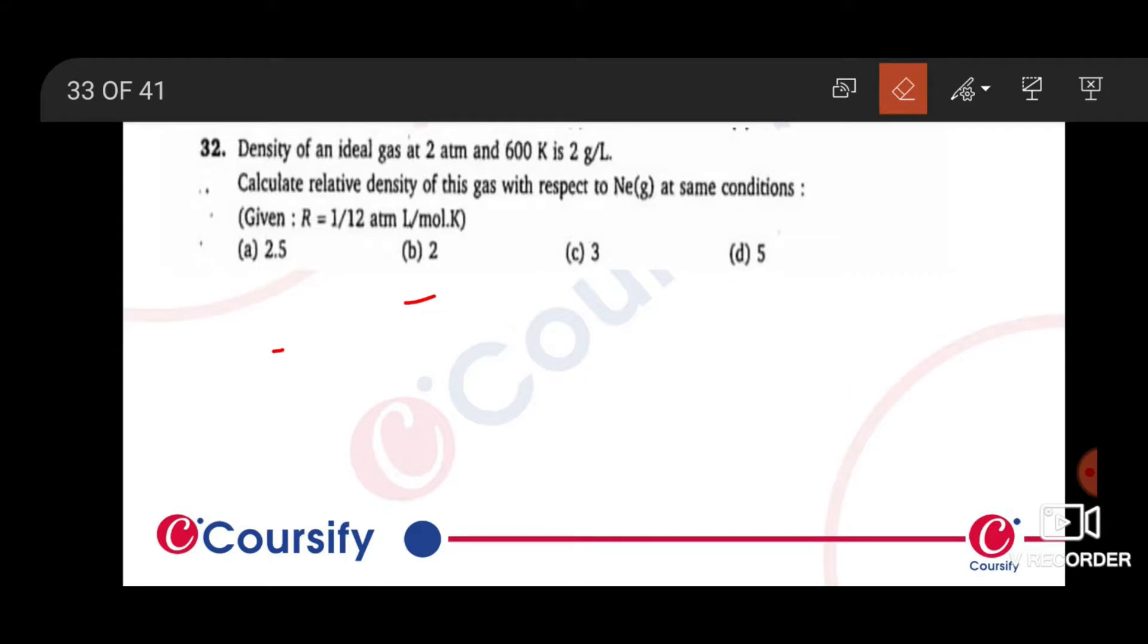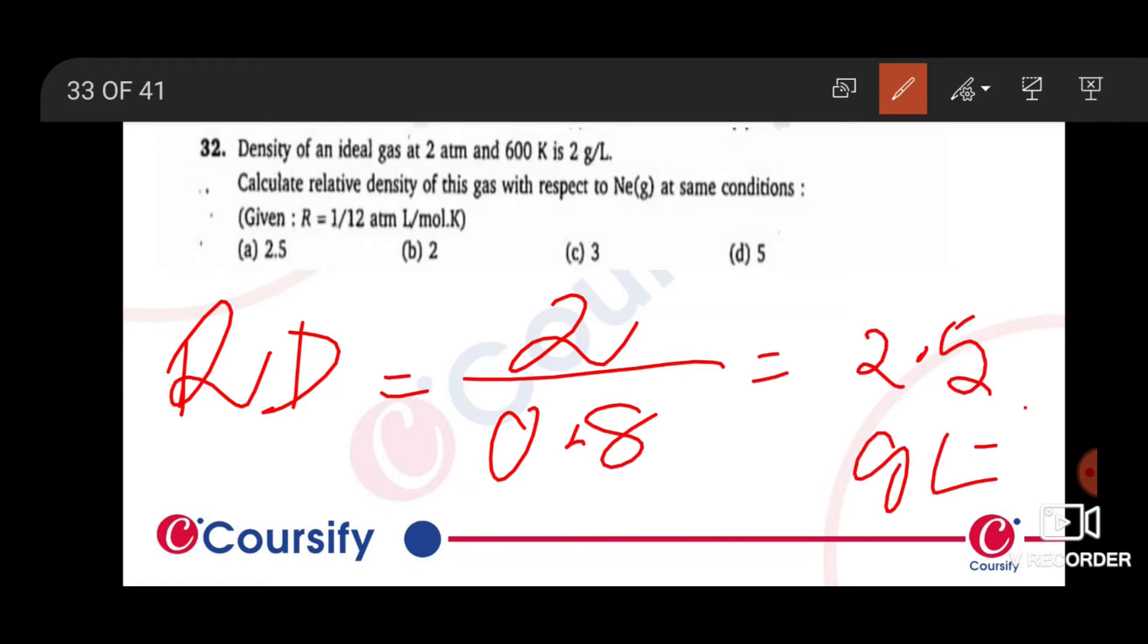To find the relative density, we divide the ideal gas density by neon density. That would be equal to 2 divided by 0.8, which equals 2.5.